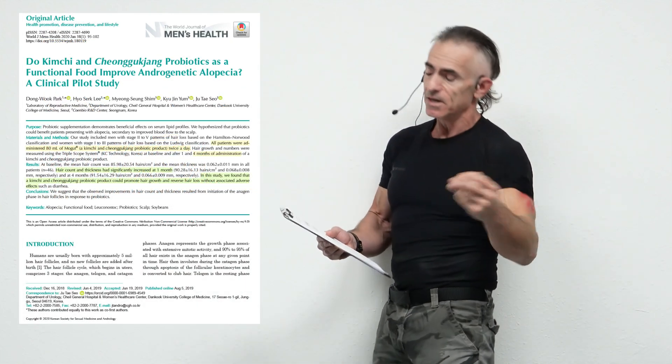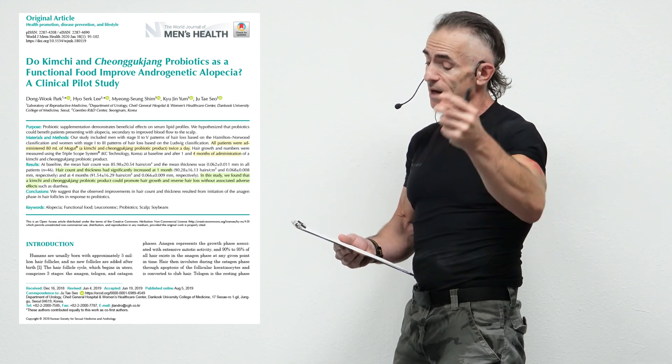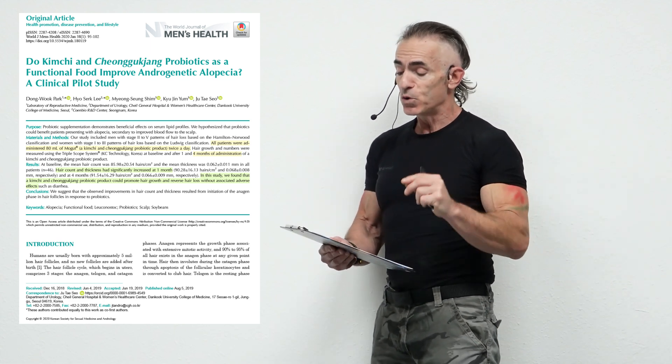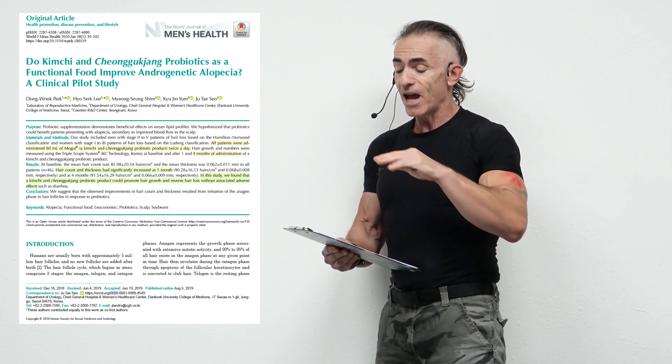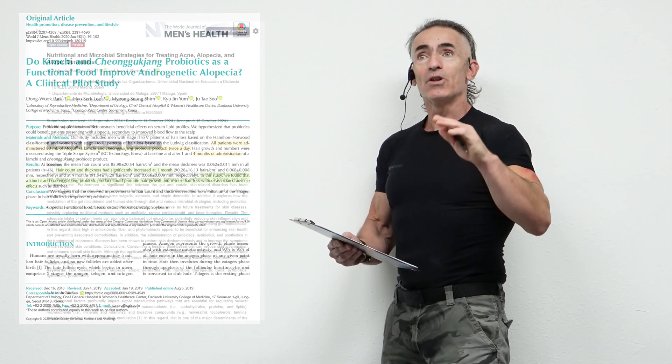Now, let's get right into the study as follows. The title of the study is Duke kimchi and Shunggu Zhang. Please forgive me for pronouncing that incorrectly or not. Probiotics as a functional food improve androgenetic alopecia clinical pilot study.